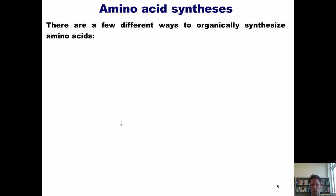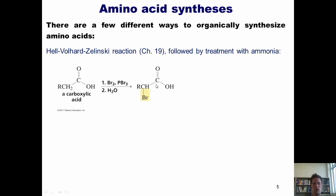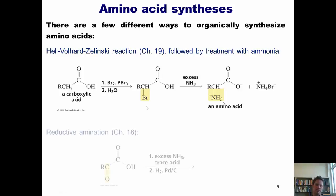Now we move on to reactions — are there ways to organically synthesize amino acids? You bet. Here are the ones I expect you to know. First, you can synthesize amino acids using the Hell-Volhard-Zelinsky reaction, which we discussed in Chapter 19, followed by treatment with ammonia. If you begin with a carboxylic acid and treat it with bromine and phosphorus tribromide, then quench with water, you selectively brominate the alpha carbon. Reacting this intermediate with ammonia does a substitution reaction to give you an amino acid.